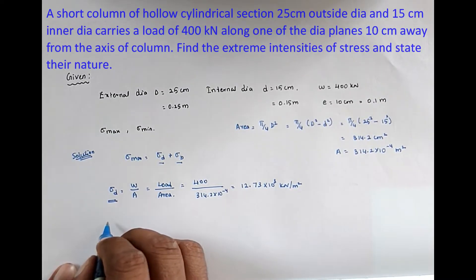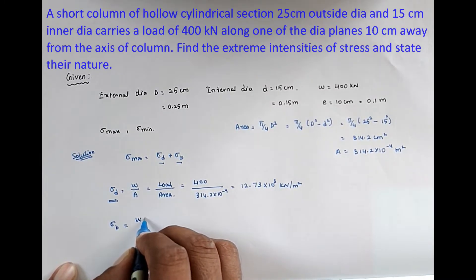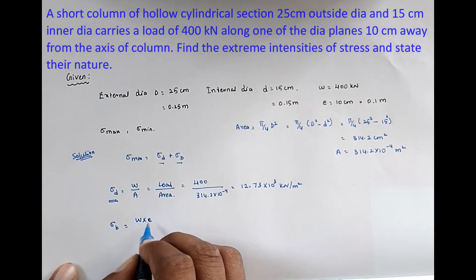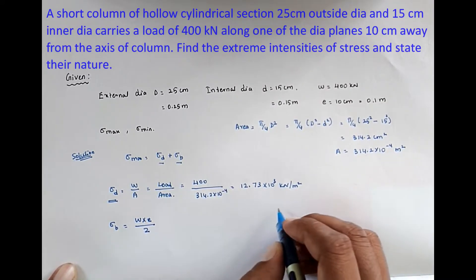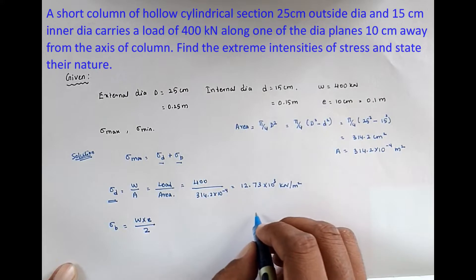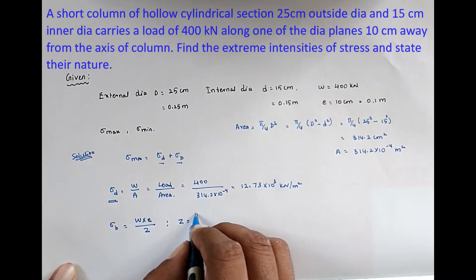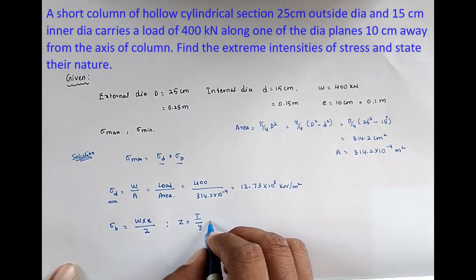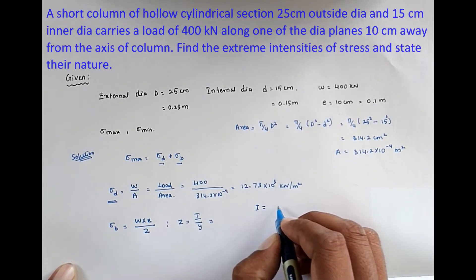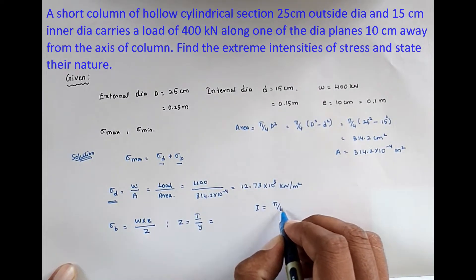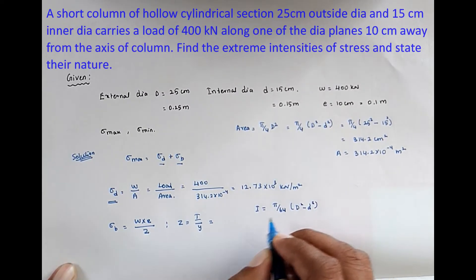Now we find the bending stress sigma_B = (W × E) / Z, where Z = I / Y. The moment of inertia for a hollow cylinder is I = (π/64) × (D⁴ − d⁴).